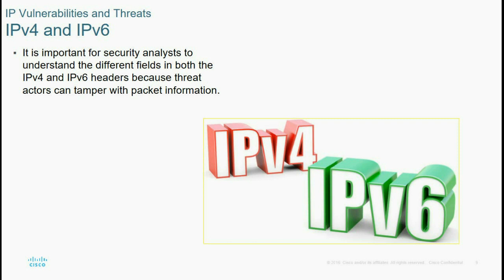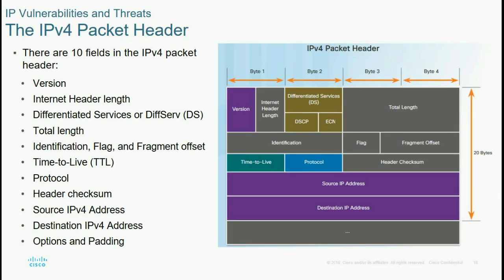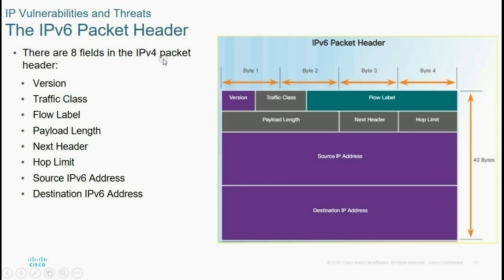It is important for security analysts to understand the different fields in both IPv4 and IPv6 headers because they are related to security. There are 10 fields in an IPv4 packet header: version, internal header length, differentiated services, total length, identification, flags, fragment offset, time to live, protocol, header checksum, source IPv4 address, destination IPv4 address, and options with padding.